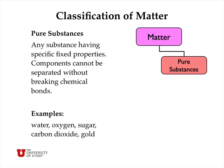We can classify matter into pure substances and mixtures. A pure substance is a substance having specific fixed properties. The components of a pure substance cannot be separated without breaking chemical bonds. Examples of pure substances are water, oxygen, sugar, carbon dioxide, gold, things like that.